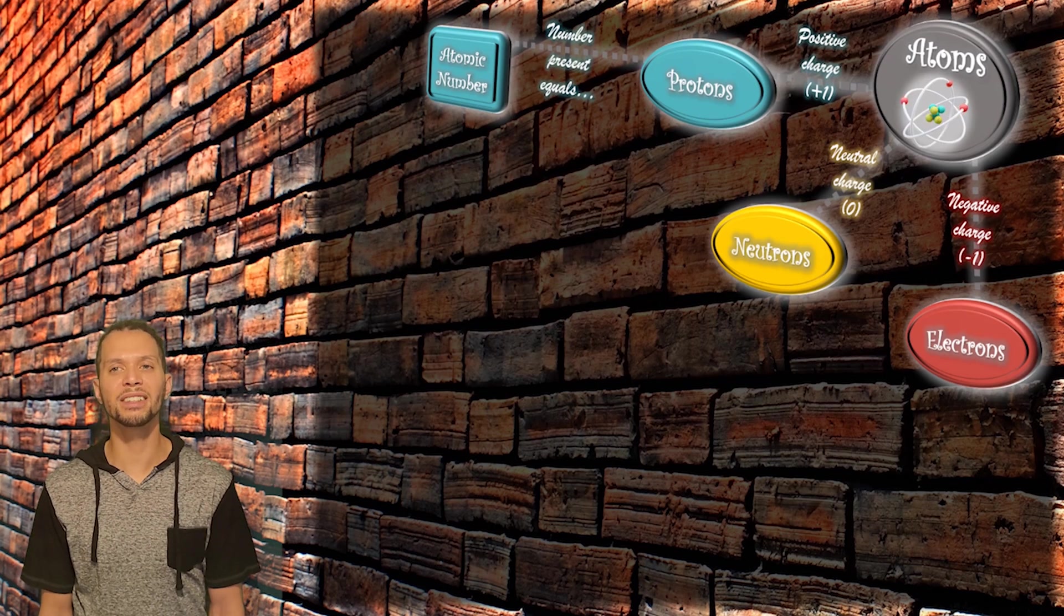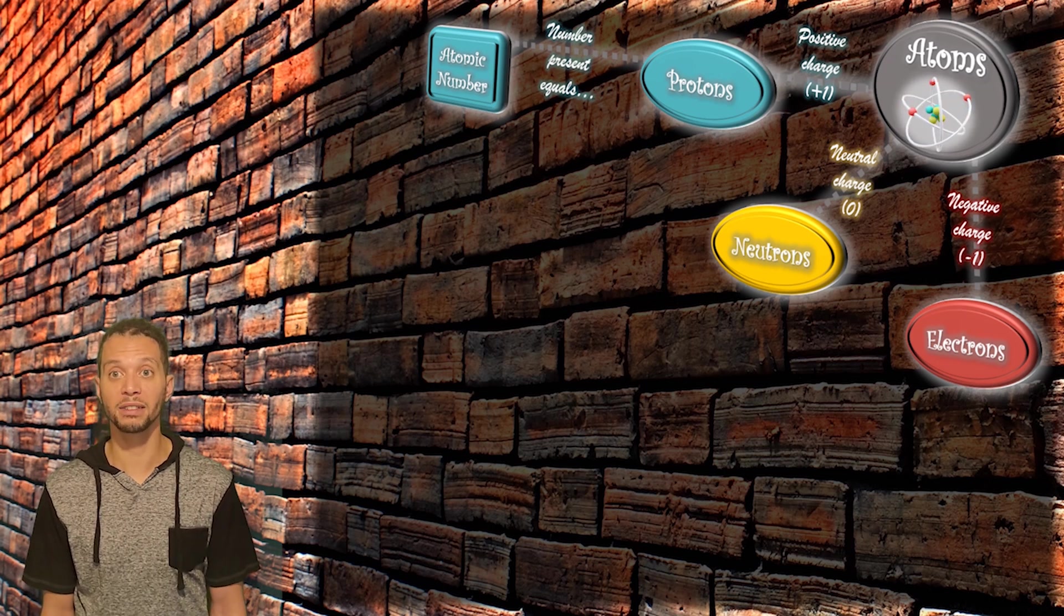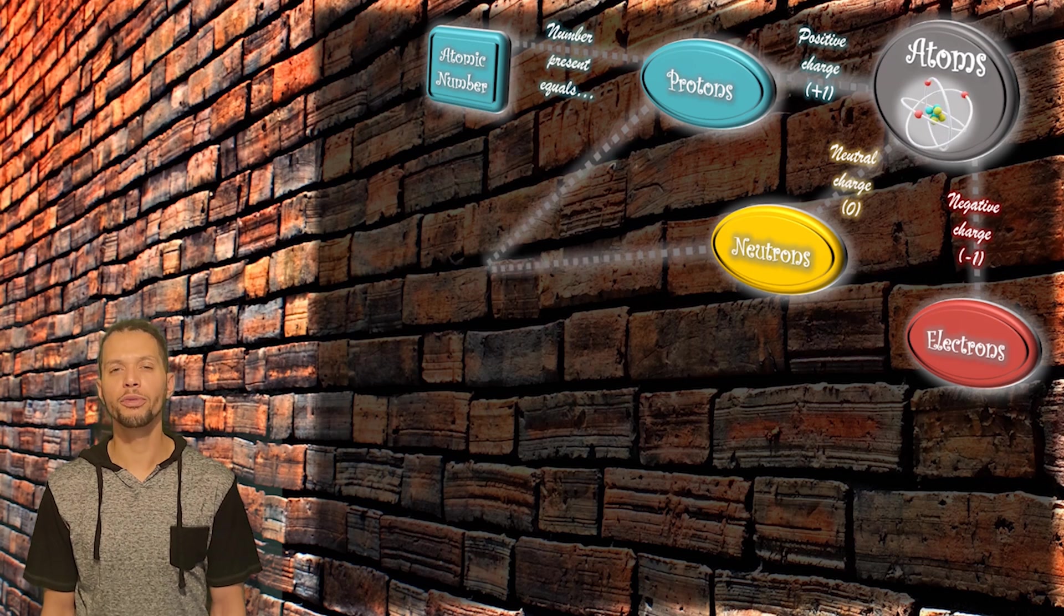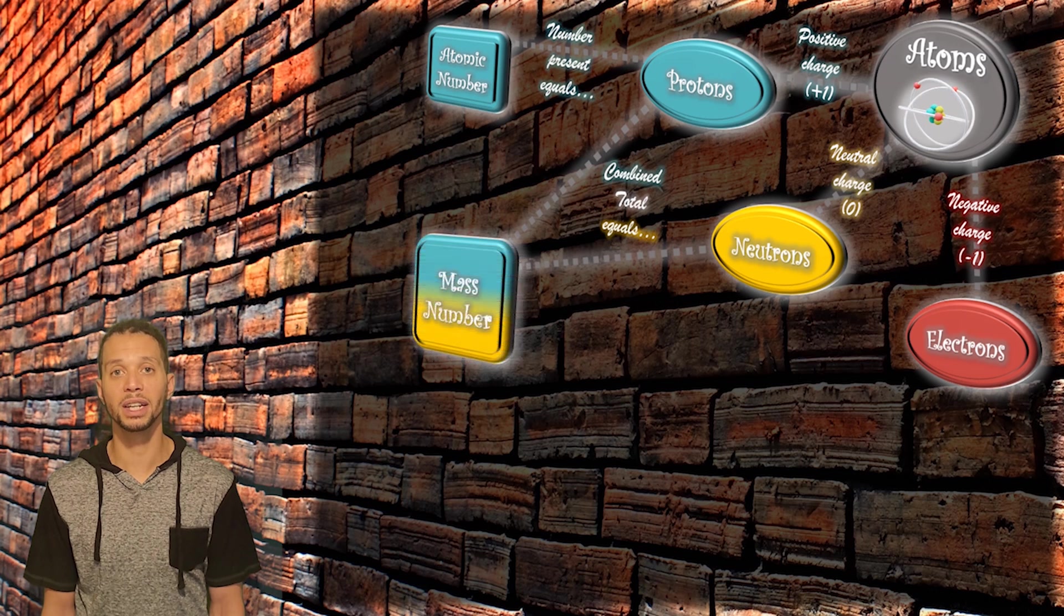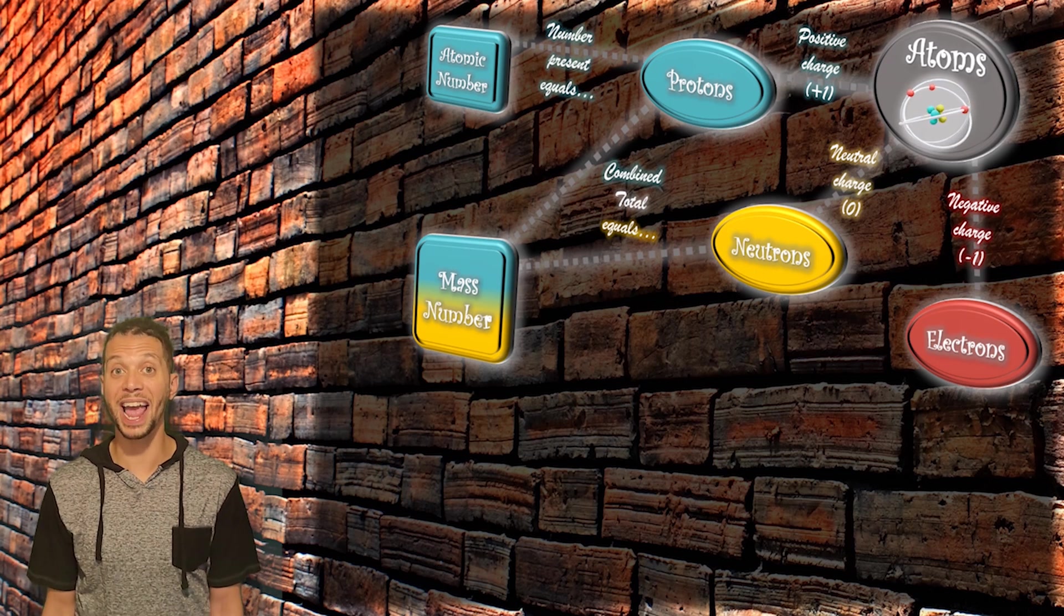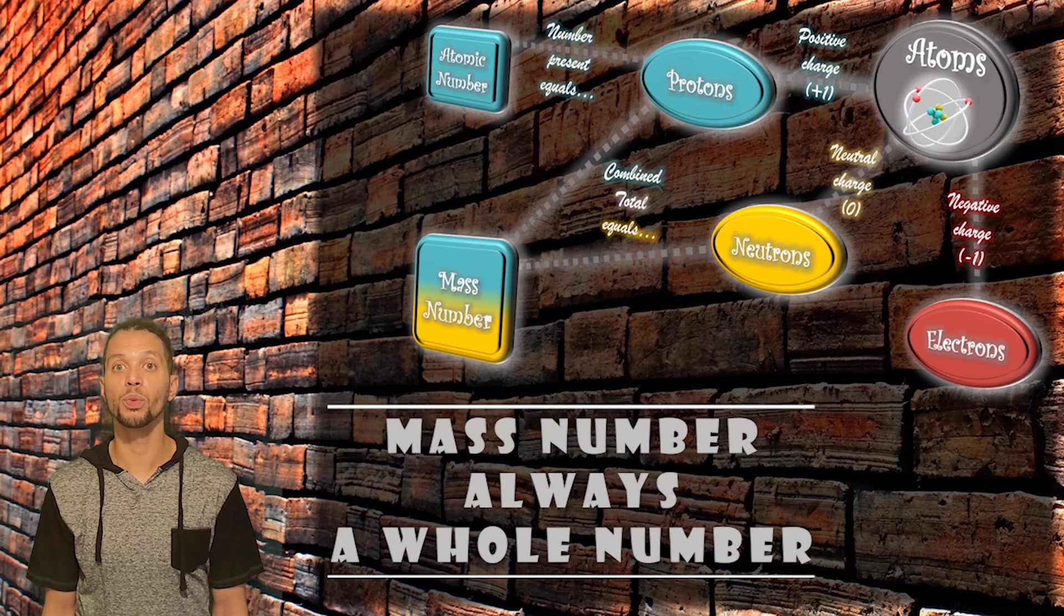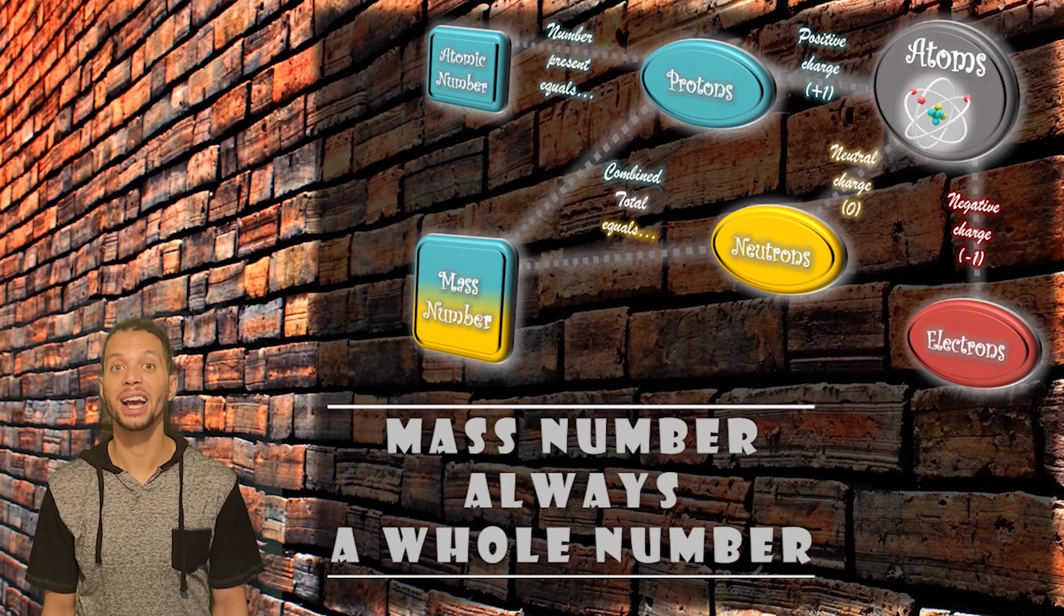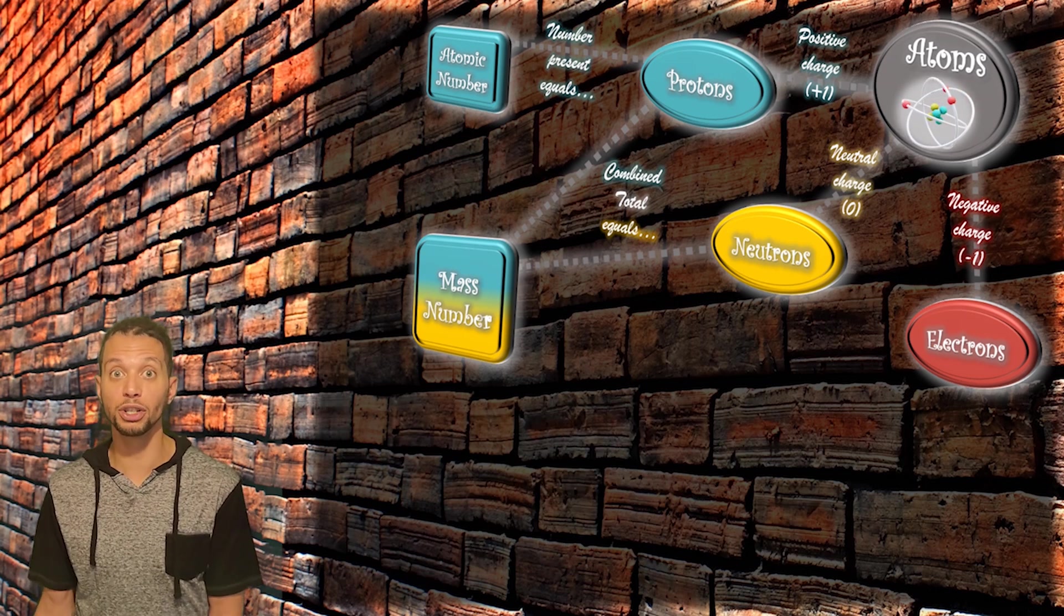Remember that we said that the mass of each proton and each neutron is basically the same, and that the electrons contribute virtually nothing to the mass of an atom? So if we simply add up and combine the total number of protons and neutrons in an atom, we can then determine what is known as the mass number of an element. Because we are adding up the number of protons and neutrons, the mass number of an element will always be a whole number.